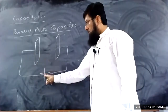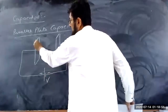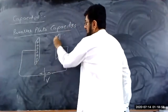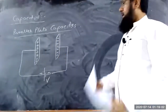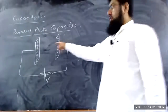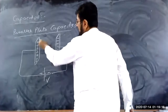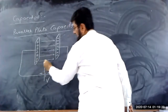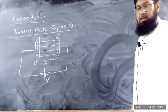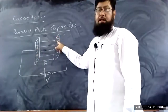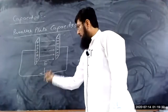The plate which is connected with the positive terminal becomes a positively charged plate, because of induced charges. And the negative terminal charges up the other plate negatively. So this plate becomes positively charged and this plate becomes negatively charged, because this is connected to the positive and this is connected to the negative.